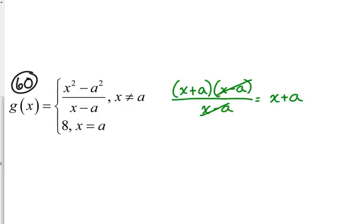So at the point a, x plus a must be equal to 8. Because that 8 in the second piece is plugging in the hole. So x plus a must equal 8 when x equals a. What makes this a little bit more difficult is that they don't give us the x value. They leave it in general terms. But it's really not that bad.